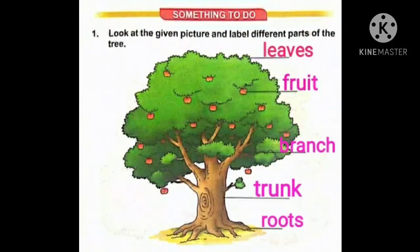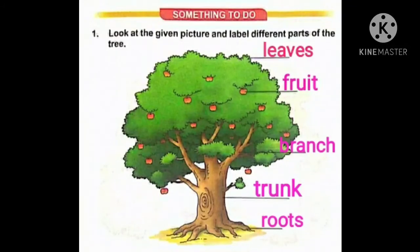Next is fruit. Phal ko kya bolte hai? Fruit. F-R-U-I-T. Fruit. Tree mein jo bahut sari daliyan hoti hai, unhe hum kehte hai branch. Kya kehte hai? Branch. B-R-A-N-C-H. Branch.